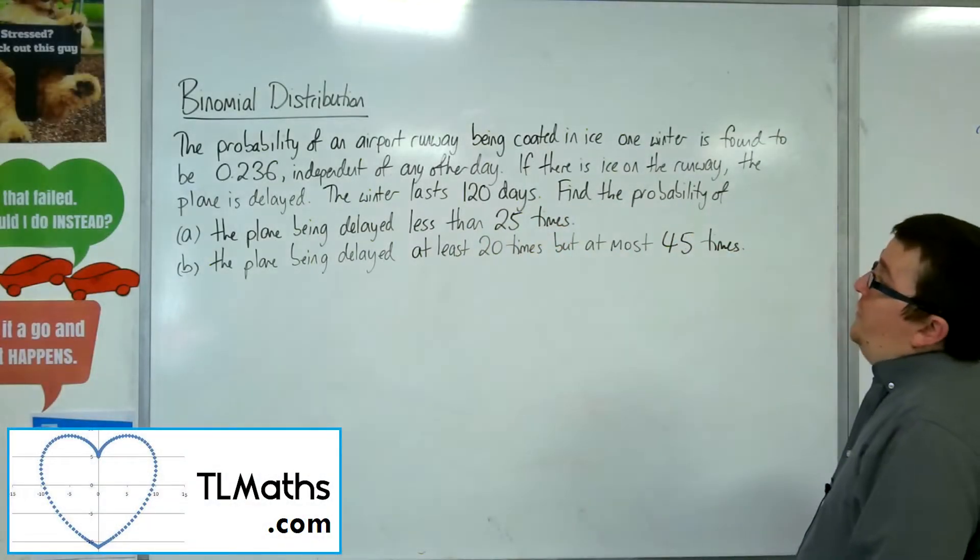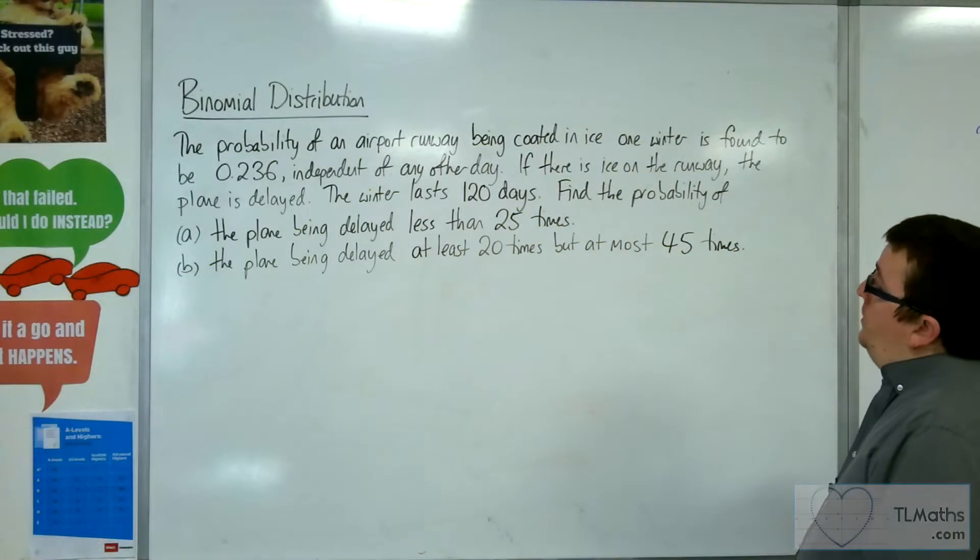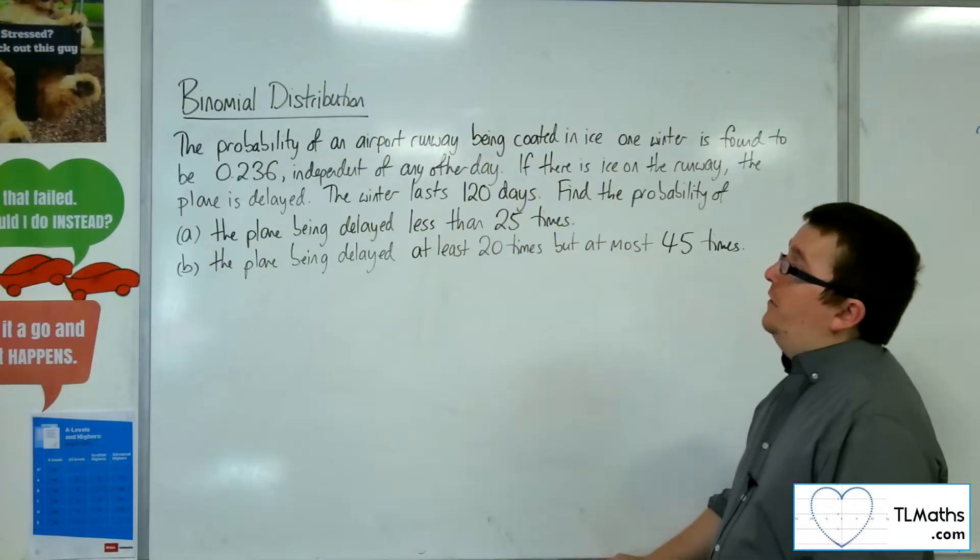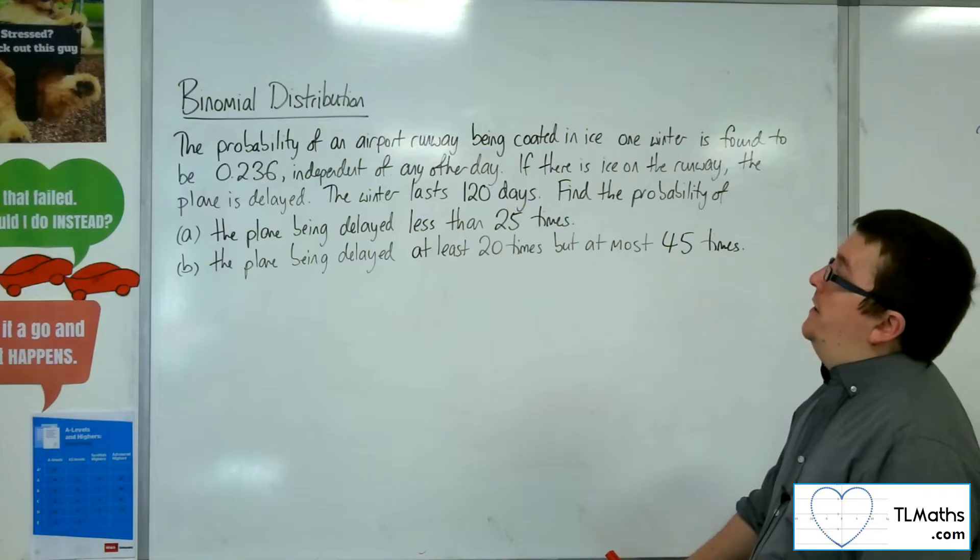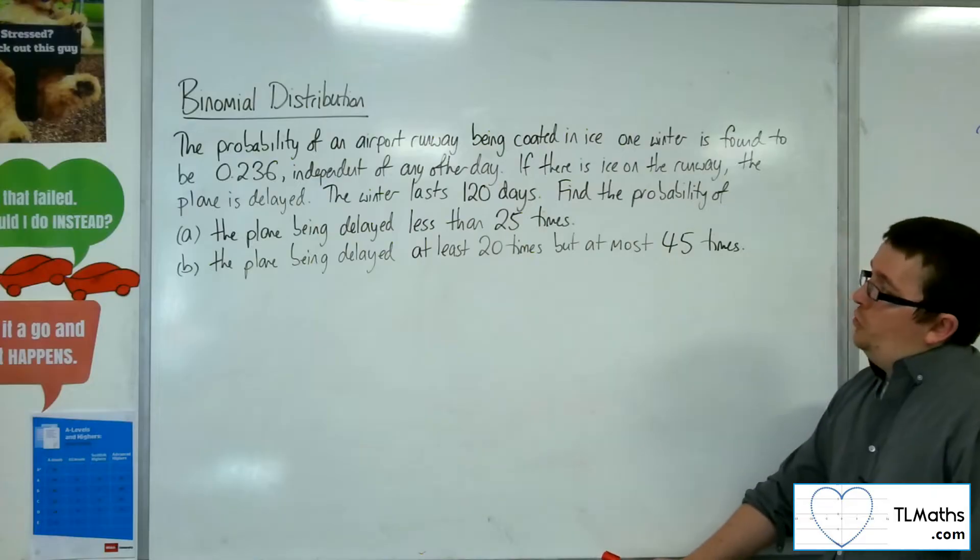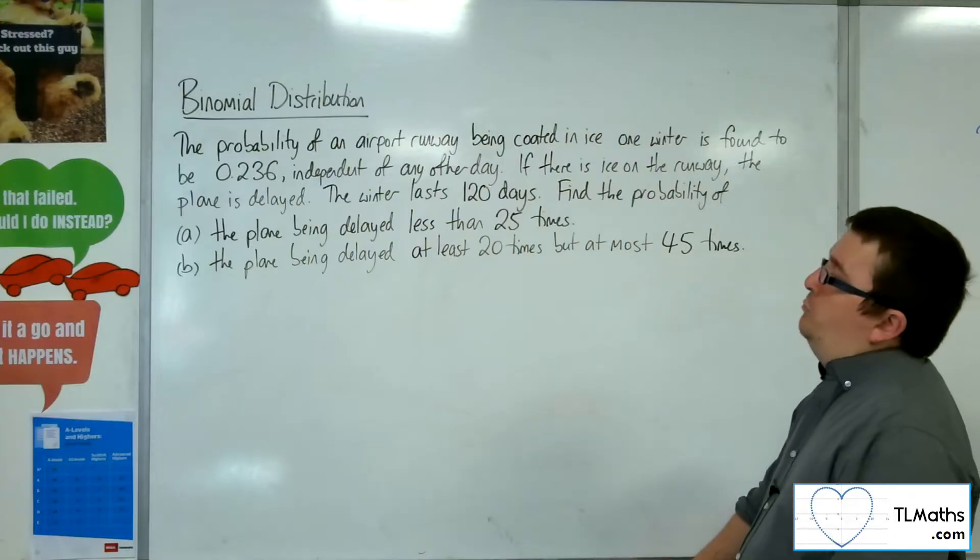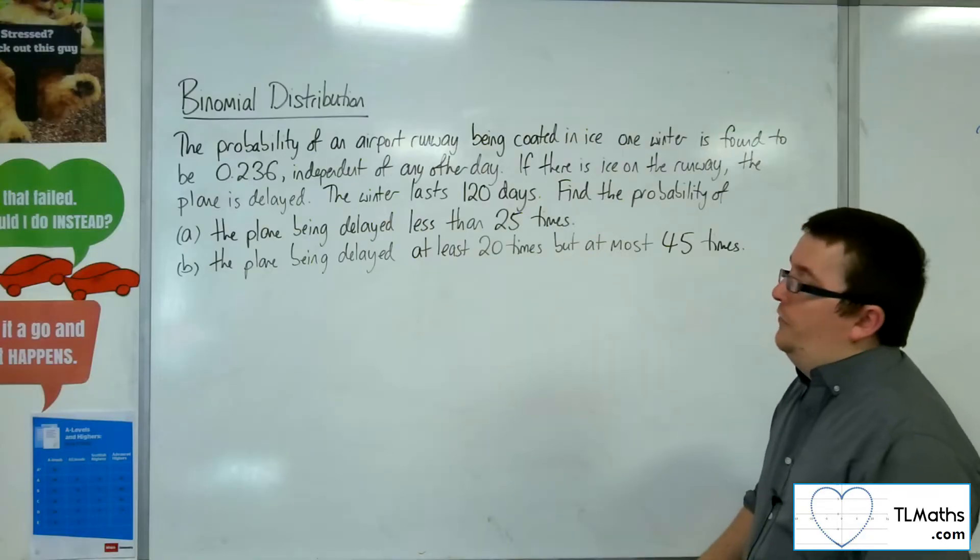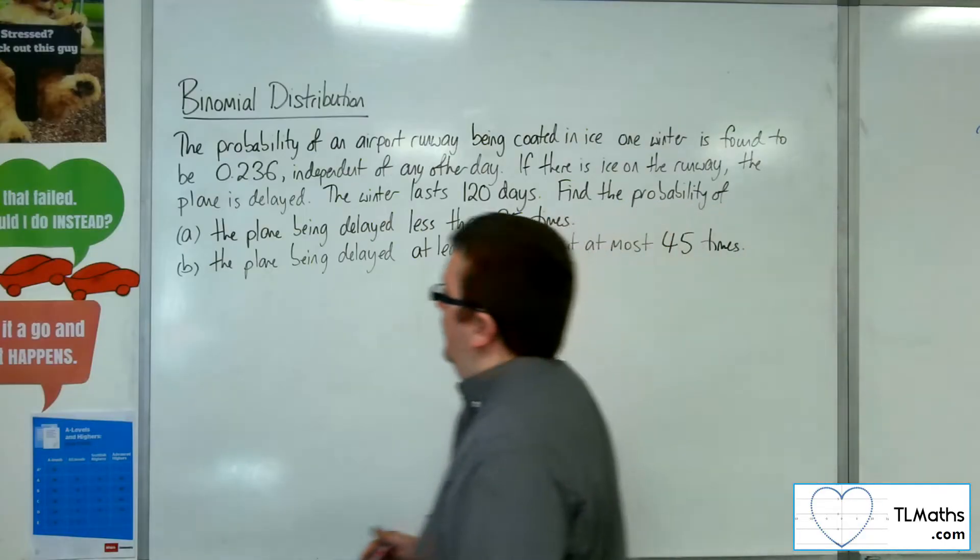In this problem, the probability of an airport runway being coated in ice one winter is found to be 0.236, independent of any other day. If there is ice on the runway, the plane is delayed. The winter lasts 120 days. Find the probability of, firstly, the plane being delayed less than 25 times.